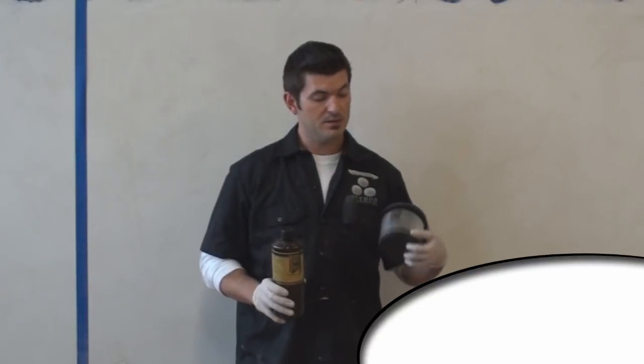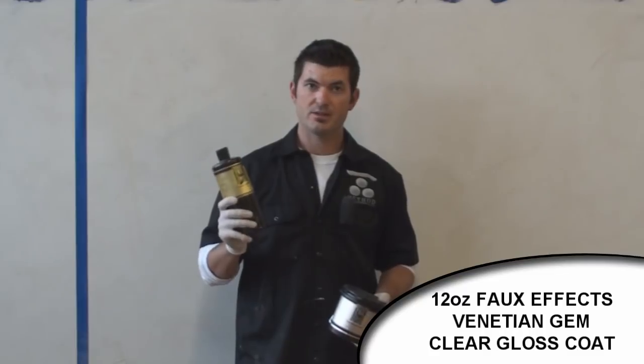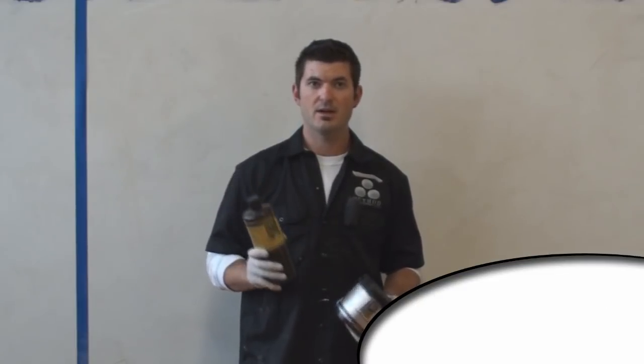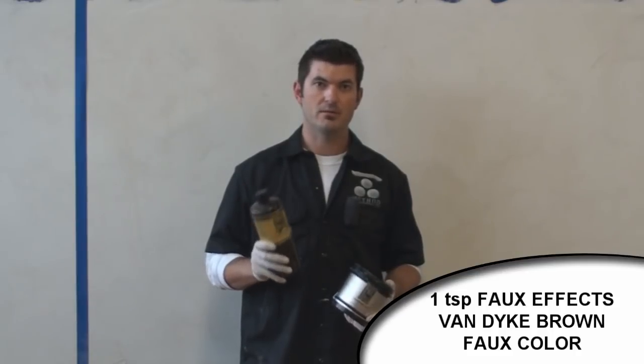So the next step, what I'm going to use is Faux FX Venetian Gem Clear Gloss Coat and Faux FX Van Dyke Brown Faux Color. And I'm going to create a mixture of 12 ounces of my clear gloss coat to one teaspoon of my Van Dyke Brown. So I'm going to get that mixed up, and we'll set up the trowel.